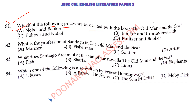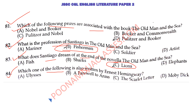What is the profession of Santiago? That is Fisherman, the right answer. What does Santiago dream of at the end of the novella The Old Man and the Sea? The right answer is lions. I have covered all of these questions with you all. Which of the following is also written by Ernest Hemingway? The right answer is A Farewell to Arms. Ulysses is by James Joyce, The Scarlet Letter is by Nathaniel Hawthorne, and Moby Dick — a very popular revenge novel — was written by Herman Melville.